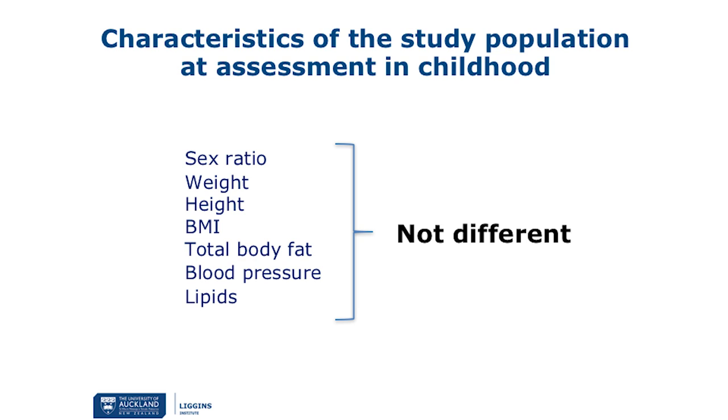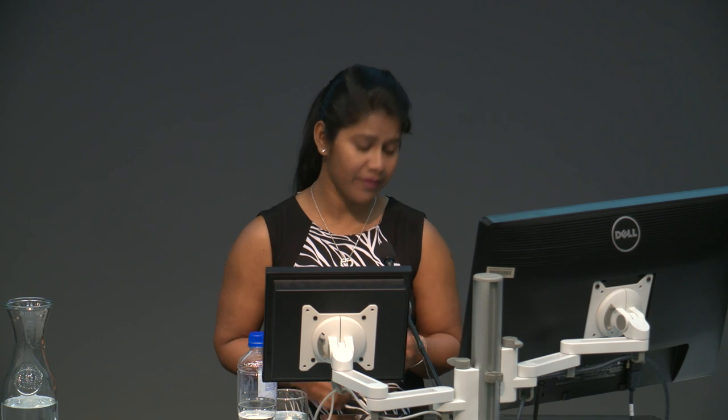From the data collected, we could not see any difference between the preterm and term groups in terms of sex ratio, weight, height, BMI, total body fat percentage, blood pressure, and lipids. However, when we looked at how insulin works in these preterm children, we found that very preterm children have reduced insulin sensitivity compared to term children, consistent with previous findings.